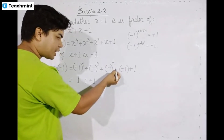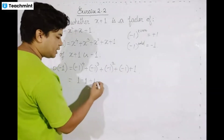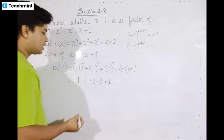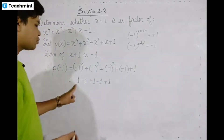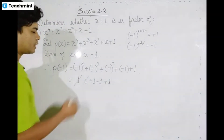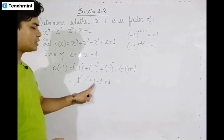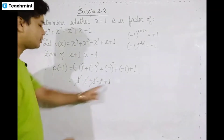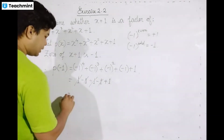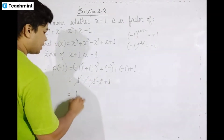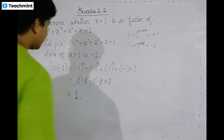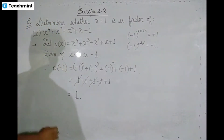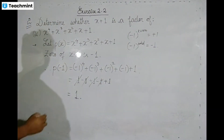Evaluating: plus one, minus one, plus one, plus one, minus one, minus one — the remainder is not zero.